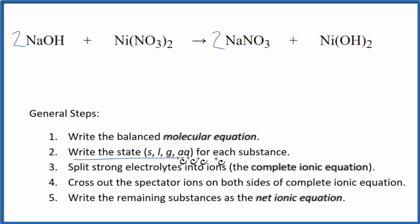Now we can write the state for each substance. So for sodium hydroxide, this is a strong base. It's a strong electrolyte. It's going to dissociate into its ions. Nitrates are very soluble. Put an AQ.